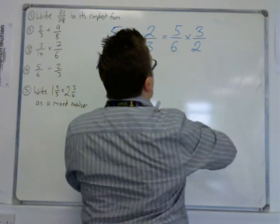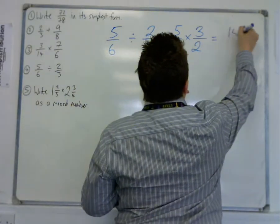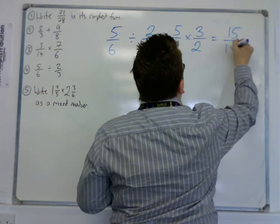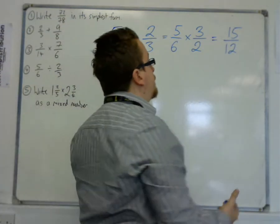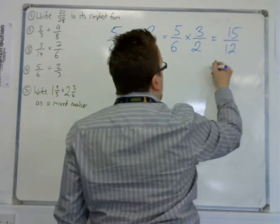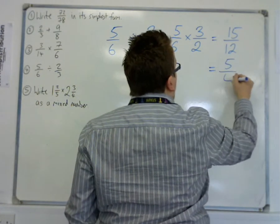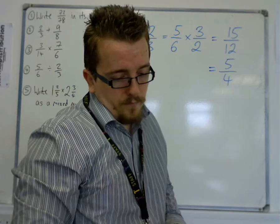Then you can just do 5 times 3 is 15, and 6 times 2 is 12. Of course, 15 over 12 can be simplified. Divide top and bottom by 3, and we get 5 over 4.